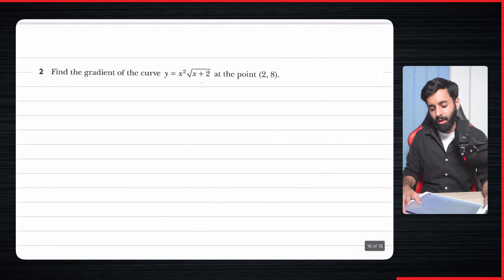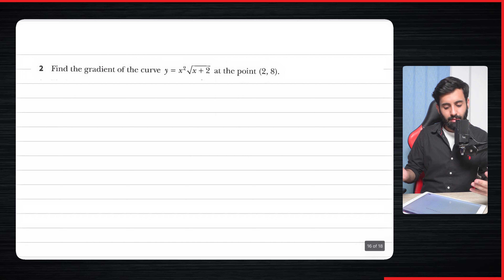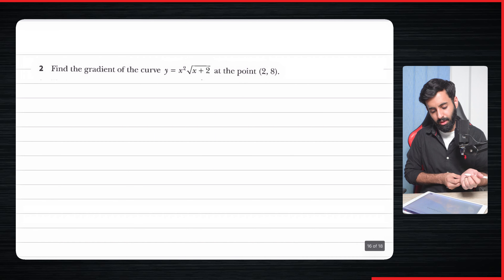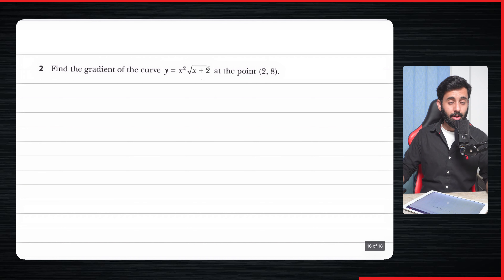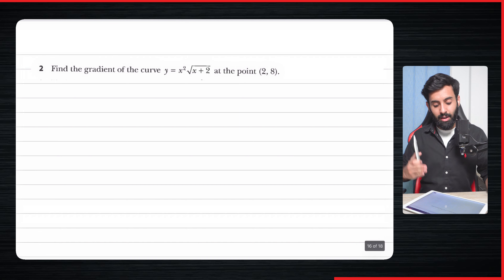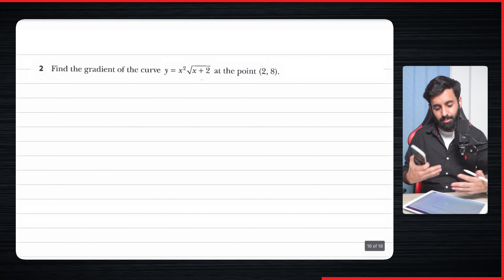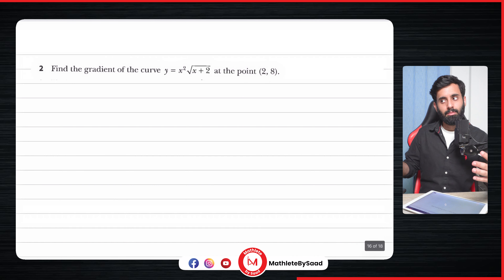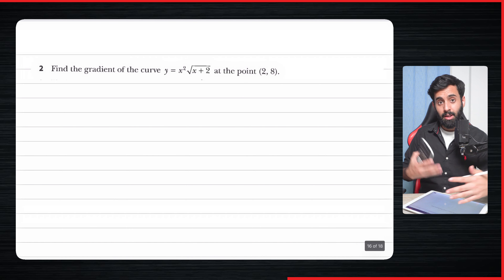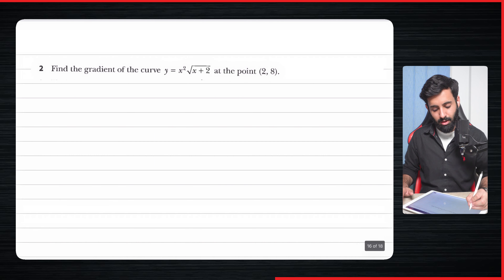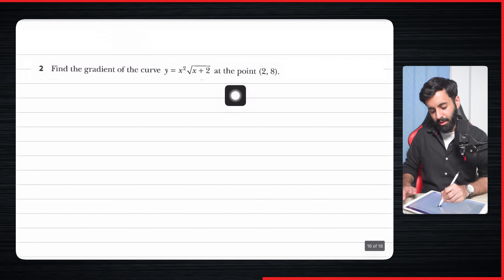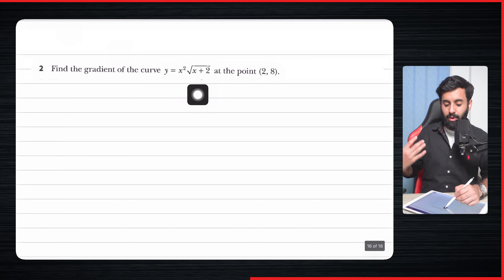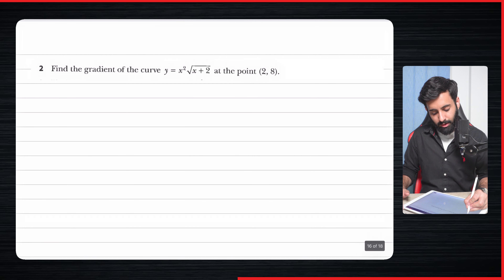Now we're going to do some word problems — no new concept, just a different way the question is structured. The question says: find the gradient of the curve y equals x² times √(x+2) at the point (2, 8). You can check your answer using a calculator by substituting a value of x into dy/dx, even though you can't differentiate on the calculator directly.